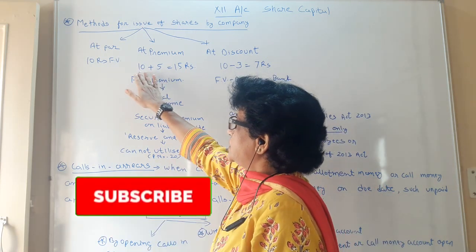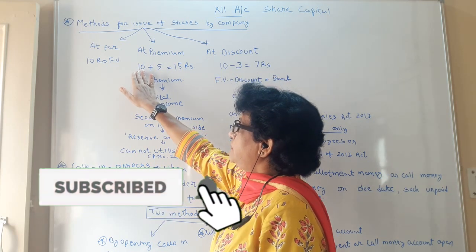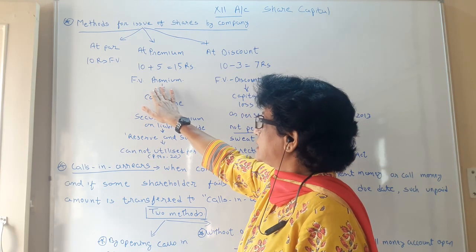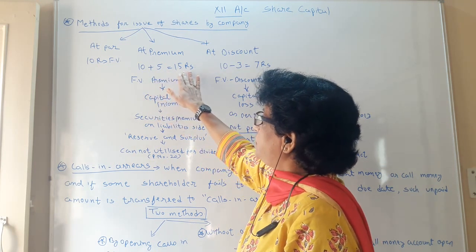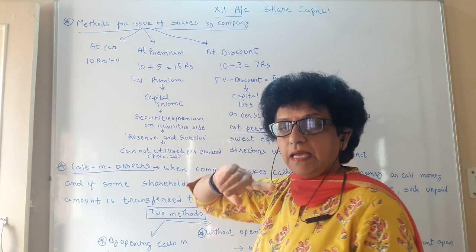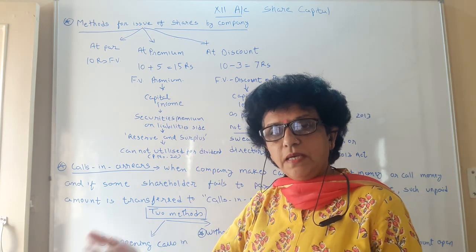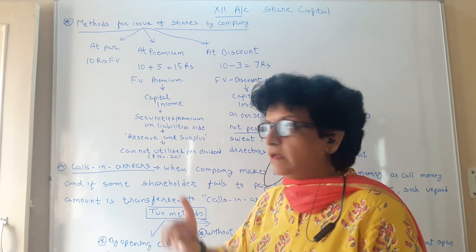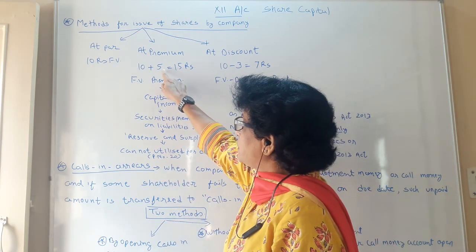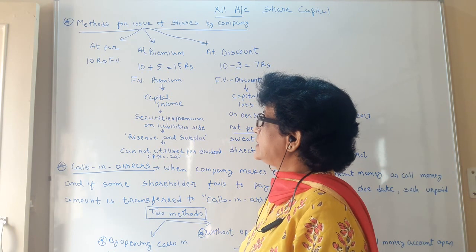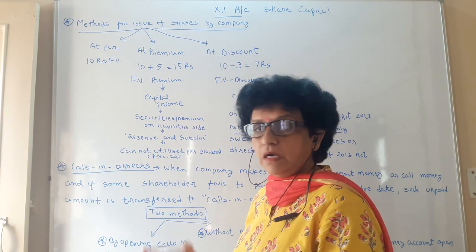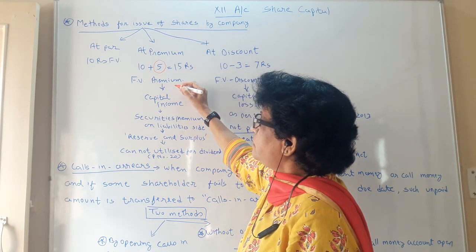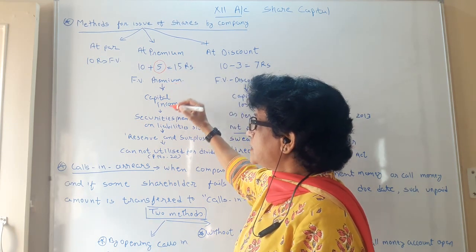Let us take an illustration: 10 rupee may be the face value and 5 rupee premium — 50% premium the company is asking. So the company asks 15 rupee. Against that 15 rupee, the share certificate given by the company shows only 10 rupee. So this 5 rupee is considered as a premium for the company — an extra income for the company.